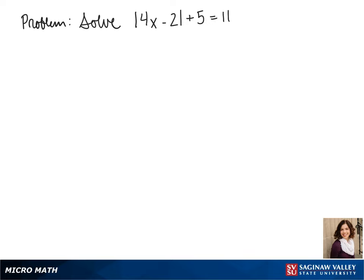Welcome to another day of algebra. Today, we're solving for the absolute value of 4x minus 2 plus 5 equals 11.